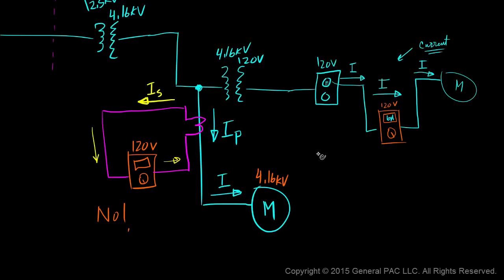So for a current transformer, IP, which is this current here, and IS, which is this current here, they're both related. So let's go over some of the terminologies.